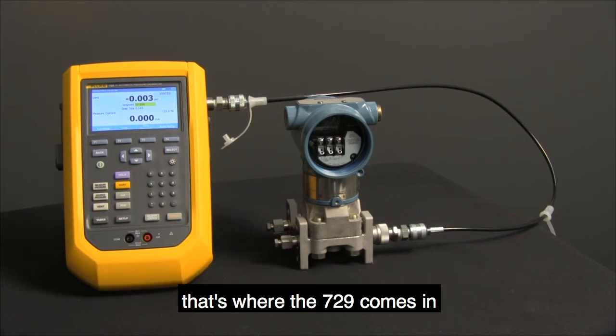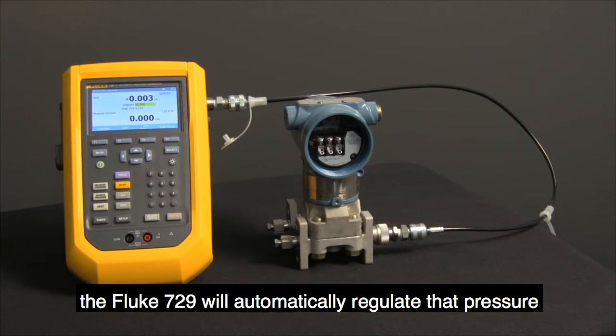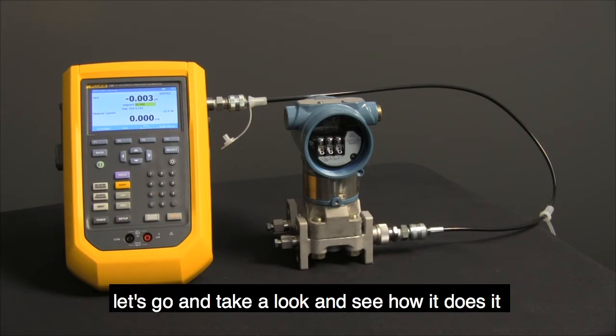That's where the 729 comes in. The Fluke 729 will automatically regulate that pressure. Let's take a look and see how it does it.